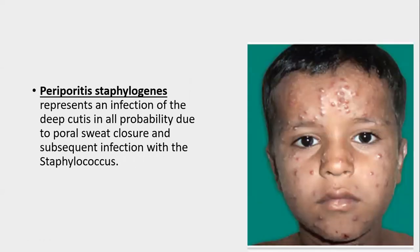Periporitis staphylogenes represents an infection of the deep cutis, in all probability due to ductal sweat closure and subsequent infection by Staphylococcus aureus. It typically presents in a young child in a hot humid environment, characterized by miliaria rubra with superimposed pustules. These pustules are perifollicular, relatively cold to touch, and are not usually associated with fever.